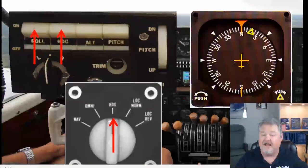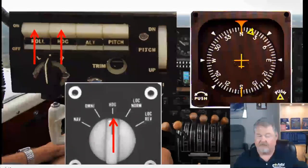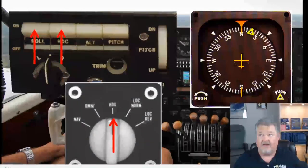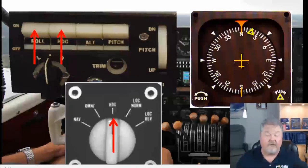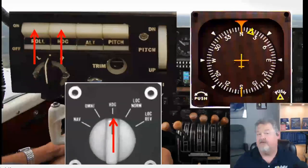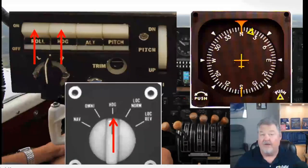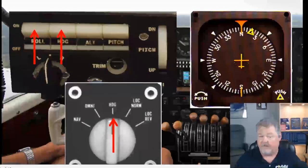Then, with the roll channel engaged, go and select heading mode. Before you do that, we have a selector at the bottom. Starting left to right: nav mode could be GPS or LORAN; omni mode is VOR — that would come from a left-right deflection; heading mode would come from the directional gyro; and LOC stands for localizer. Localizer normal allows the autopilot to fly a front course into the runway. Localizer reverse actually reverses the ailerons' turning conditions to fly a back course — instead of flying toward the needle on the front course, you would fly away from the needle to center it on the back course. The autopilot can do that.